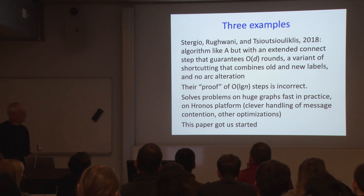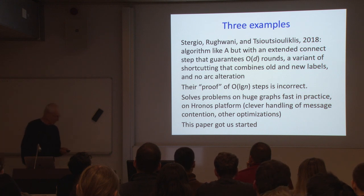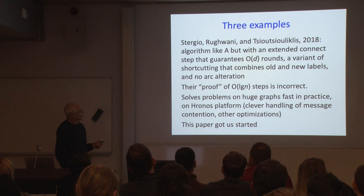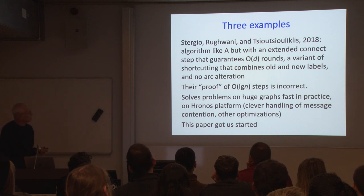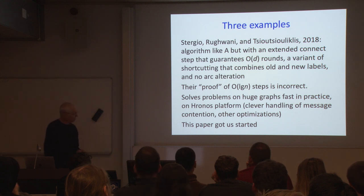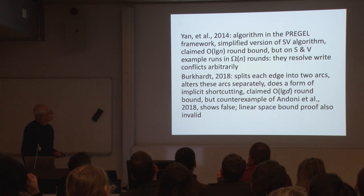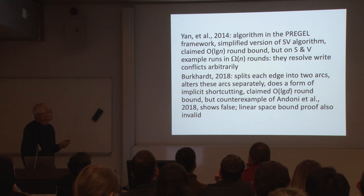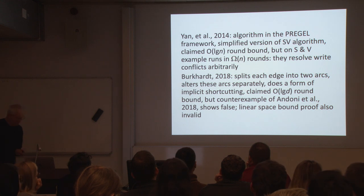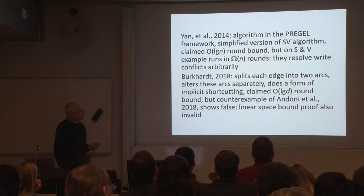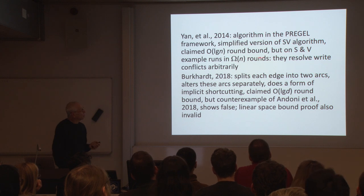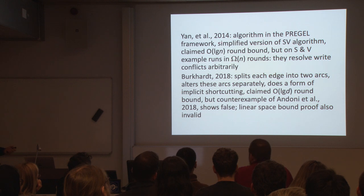Experimental algorithmics is an important and underappreciated field — one has to be very careful to get results that are meaningful. This Yahoo paper is what got us started on our research. Another paper proposed a simplified version of the Shiloach-Vishkin algorithm and claimed the log n bound, but on the Shiloach-Vishkin counterexample it runs in linear rounds because they didn't resolve write conflicts correctly — they misunderstood the problem.